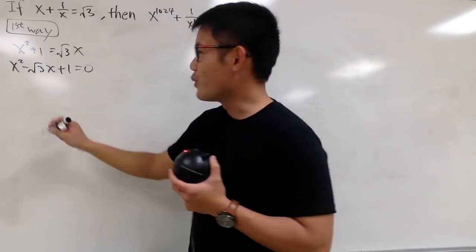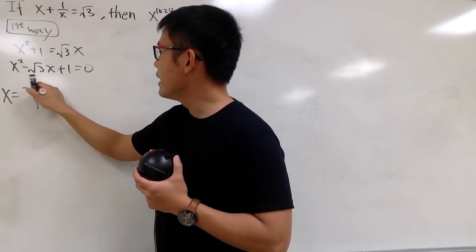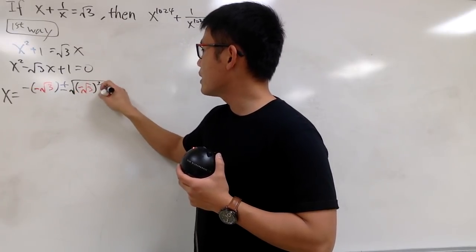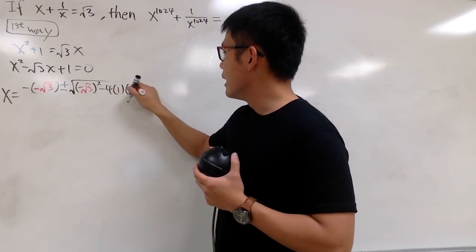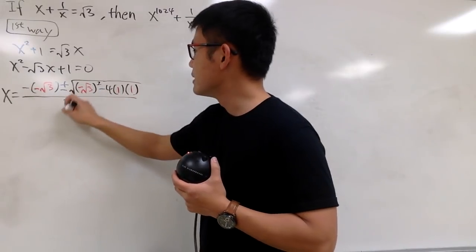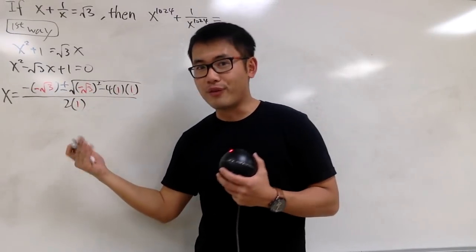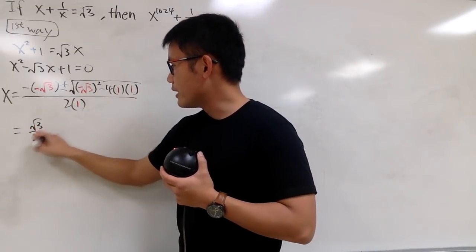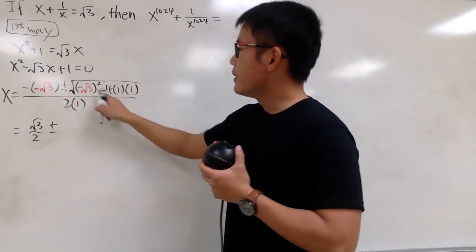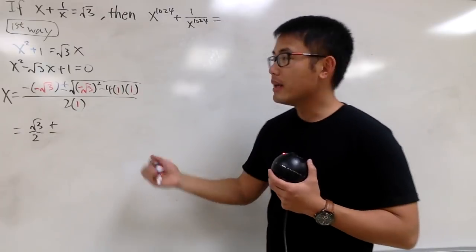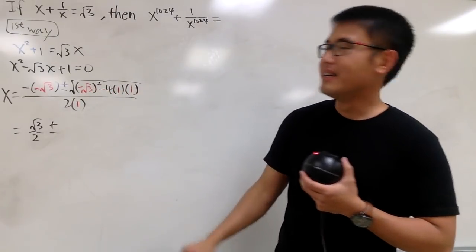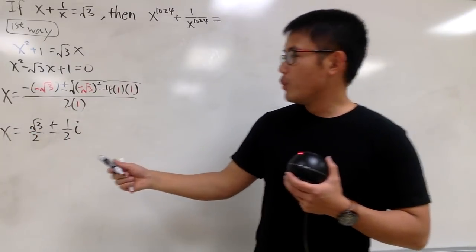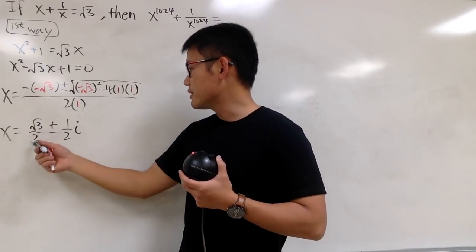We can use the quadratic formula to solve for x. So x equals negative b, which is negative square root of 3, plus or minus the square root of b squared — that's (negative square root of 3) squared — minus 4 times a, which is 1, times c, which is also 1, all over 2 times a, which is 1. Simplifying: that gives us square root of 3 over 2, plus or minus — since 3 minus 4 equals negative 1 inside the square root, that gives i. So we have plus or minus one-half i.